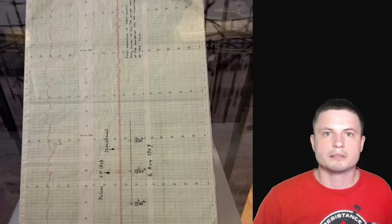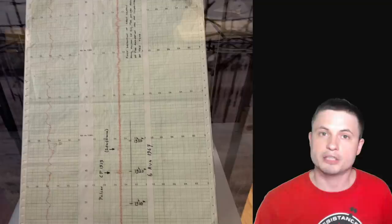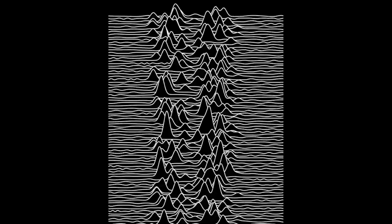But essentially it allowed Jocelyn Bell, this is her in 1967, to detect radio signals from various locations in the night skies. And this is exactly what she did. This is actually the photo that was taken of the detection, but what they discovered was an unusual repetitive pattern coming from a specific location in the night skies. And it was actually a radio signal.